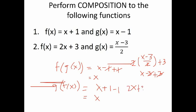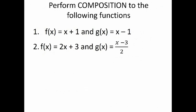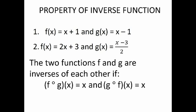Continuing with example 2, g∘f(x): substituting f(x) = 2x + 3 into g gives (2x + 3 − 3)/2 = 2x/2 = x. We performed composition of functions because it is the property of inverse functions that if f and g are inverses of each other, then f∘g(x) = x and g∘f(x) = x. Once you perform the composition and both results are x, that means the two functions are inverses of each other.